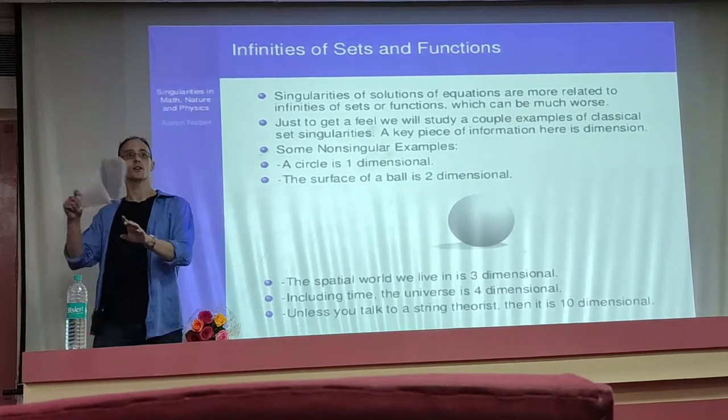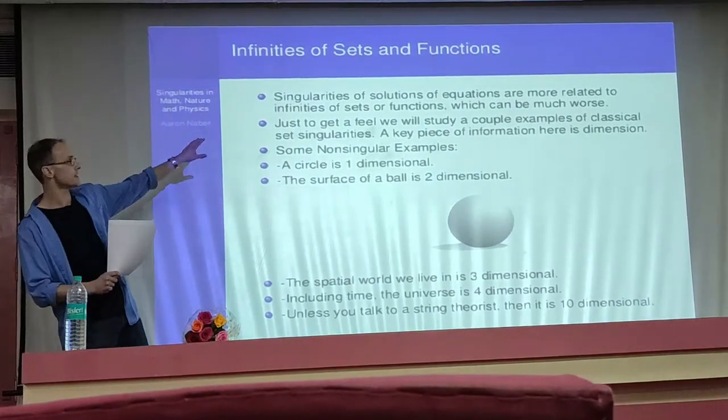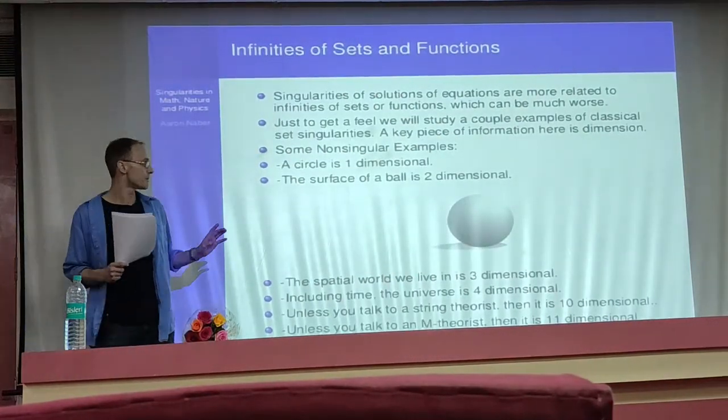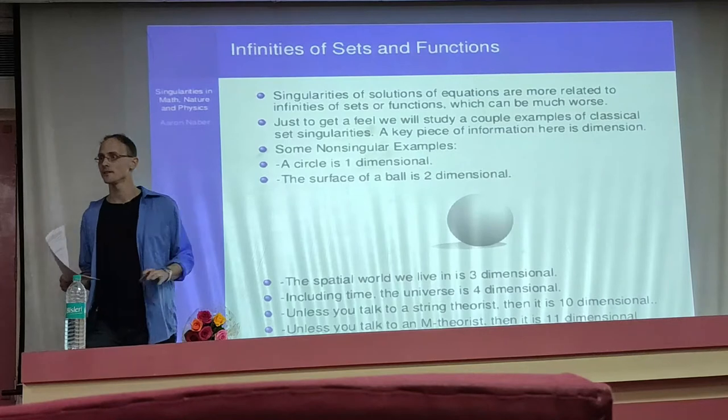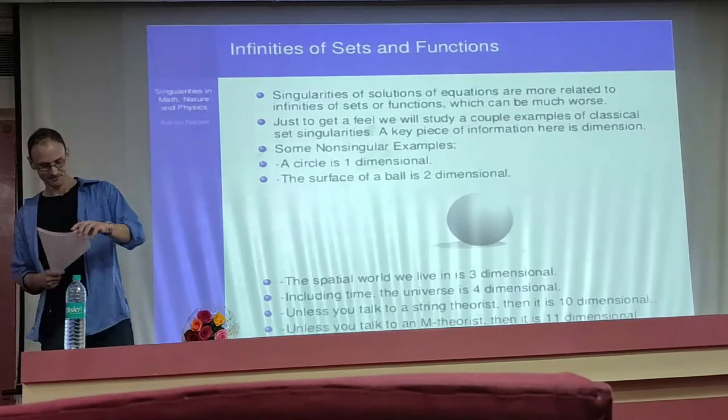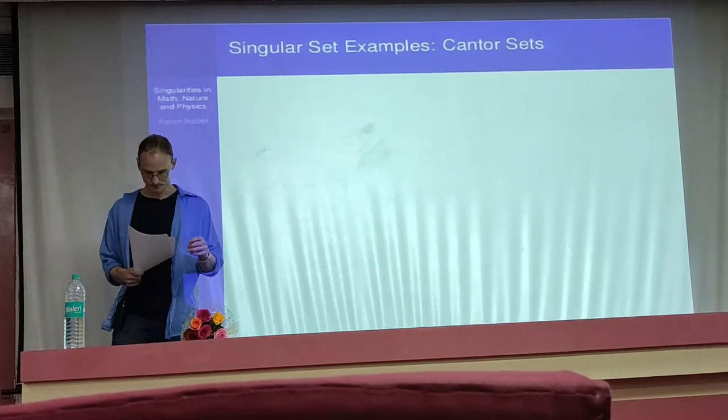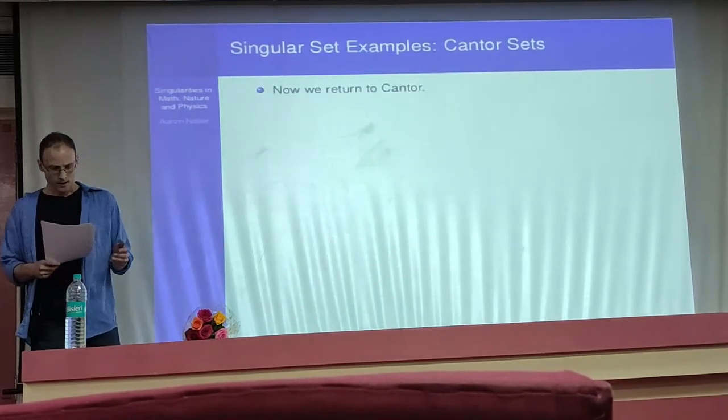By the way, these other six dimensions are so-called Calabi-Yau manifolds. This is one of the things that I mentioned on the last slide. Unless you're talking to an M-theory theorist, at which point it's at least 11-dimensional.